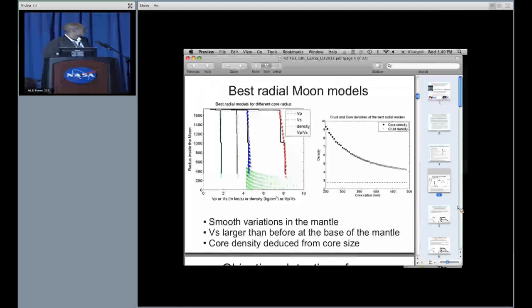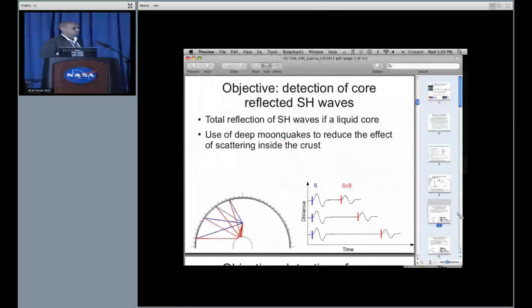Then we try to detect core reflected SH waves. Why these waves? Because if we have a liquid outermost core, the reflection coefficient here is one, so we expect a large amplitude for these waves. We use deep moonquakes in order to reduce the effect of the crust, and we use the differential time between the direct phase here in blue and the core reflected phase here in red in order to reduce the effect of the crust, because these two waves look at the crust in the same manner. Finally, we use deep moonquakes because these quakes are expected to radiate more energy along the vertical.